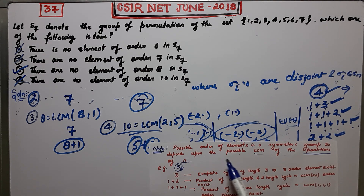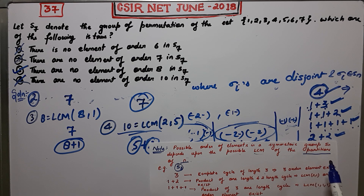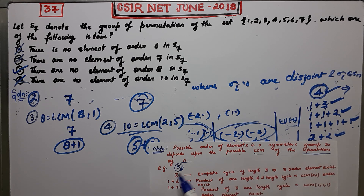This is a very easy question once you know this note: the possible order of elements in the symmetric group Sn depends upon the possible LCM of the partitions of n. Thank you.